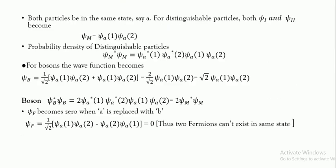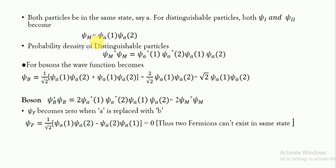In the earlier case we considered two states a and b. If we consider both particles to be in the same state, then a equals b, and we can write only one wave function. If there are two states we can write two wave functions, but if there is only one state, it can be expressed in a single term.